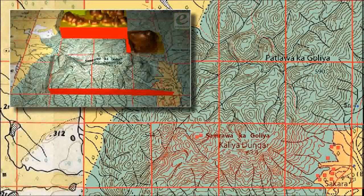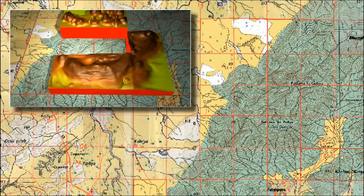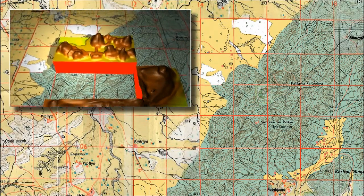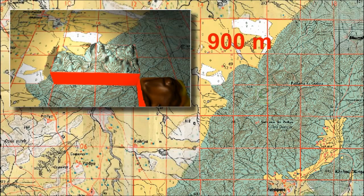In grid 1506 to 1706, contours are closely spaced and in the center contours are circular in shape, which represents ridges. The height of the ridge is marked with a spot height of 639 meters. In grids 1508 and 1608, the contour value of 900 indicates the height of the region is 900 meters.